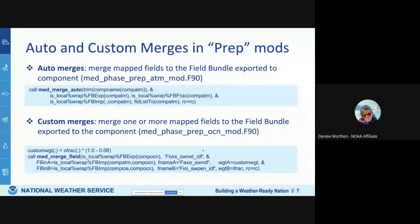The second option is the custom merge, which is more typical for the prep phase ocean. In this case you can't directly use the add-merge function because you need to create a field that is actually coming from two separate components — an atmosphere and an ocean. This is a field-by-field merge where you call med-merge-field: you have a field from the atmosphere on the ocean grid weighted by some amount, and you combine it with a second field from the ice to create the actual field placed into the export state for the component ocean.